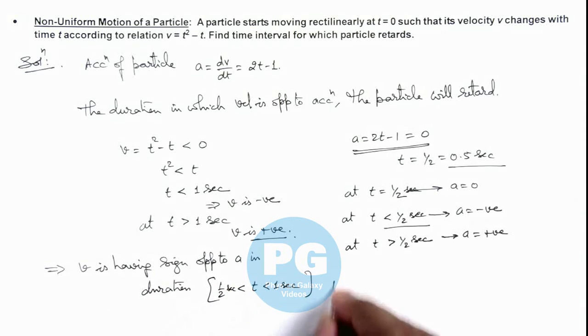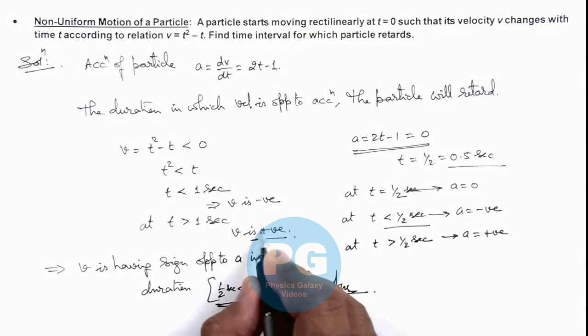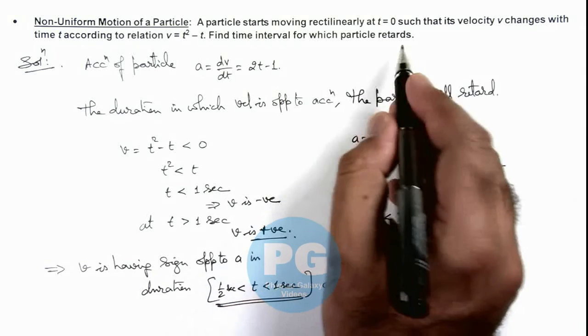So this is the result of our problem: the duration from 0.5 to 1 second is when the particle's speed is decreasing, or we can say the particle is retarding.